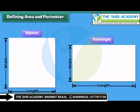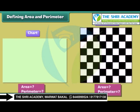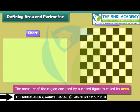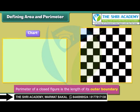We already know about closed figures like squares and rectangles. For example, this chart paper is a rectangular chart, while the chessboard is a square. The measure of the region enclosed by a closed figure is called its area. Perimeter of a closed figure is the length of its outer boundary. Let us now find the ways of calculating area and perimeter of rectangles and squares.